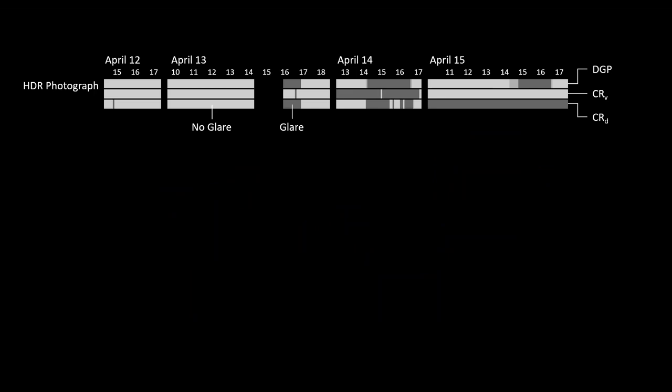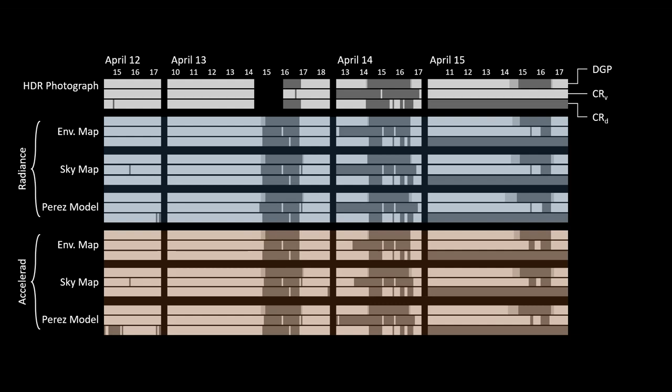These results can be presented as a timeline showing when glare occurred over the experiment. Times with no glare are shown in white; times when glare was observed through DGP or contrast ratio are shown in gray. One period on April 13th has no data due to camera battery failure. Comparing these timelines across the three methods in both Radiance and Accelerad, all simulation methods provide fairly consistent and accurate predictions of the glare characteristics of the space—meaning glare can be predicted accurately before the space is built.